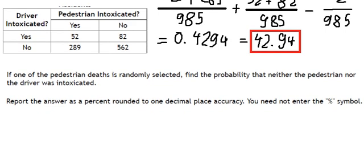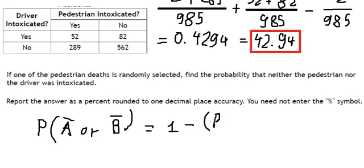Now let's go to the last one. If one of the pedestrian deaths is randomly selected, find the probability that neither the pedestrian nor the driver was intoxicated. The formula for this is A bar or B bar equals 1 minus P(A and B).